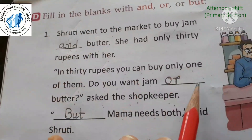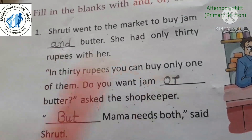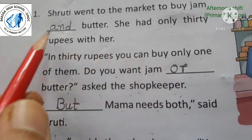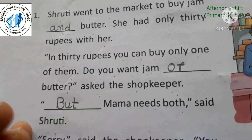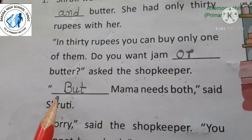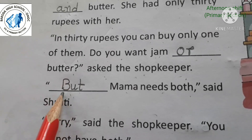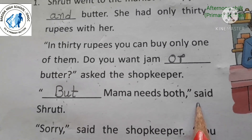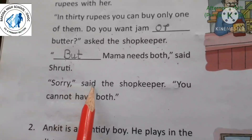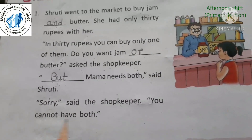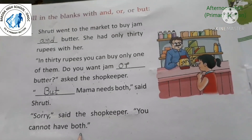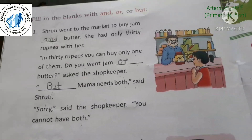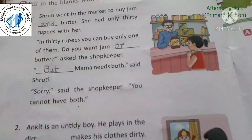Here 'and' and 'or' appear in the middle of sentences so they are written in small letters, but 'But' starts a new sentence so it is written with a capital B: 'But mama needs both.' The shopkeeper said, 'Sorry, you cannot have both' — you can buy only one thing in thirty rupees, not both.